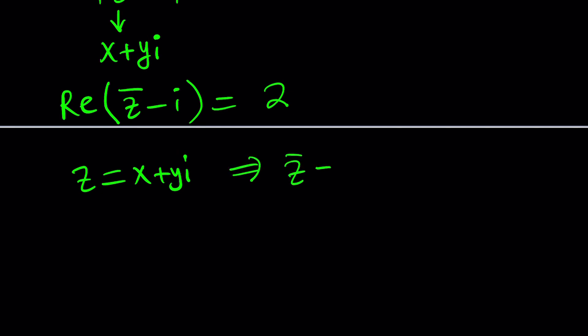z bar is defined as the complex conjugate of z, which means when you add to z or multiply by z, you always get a real number. In that sense, it's unique. So z bar is x minus yi if z is x plus yi.